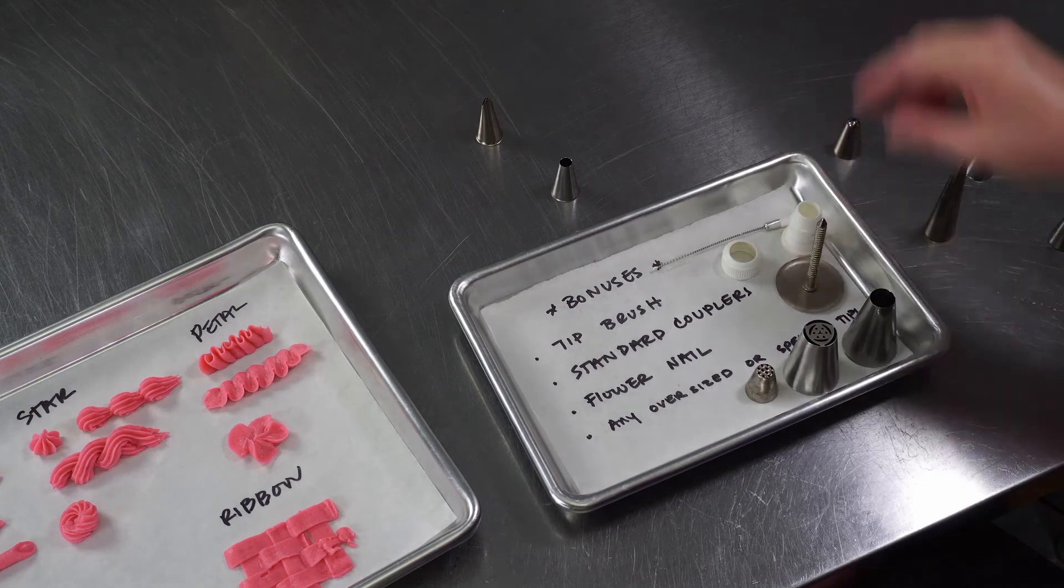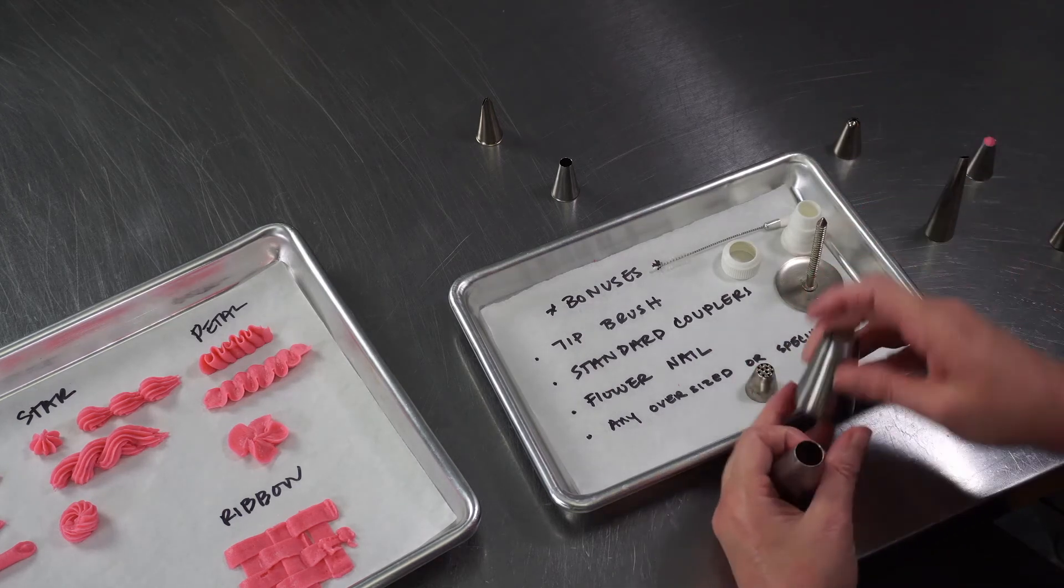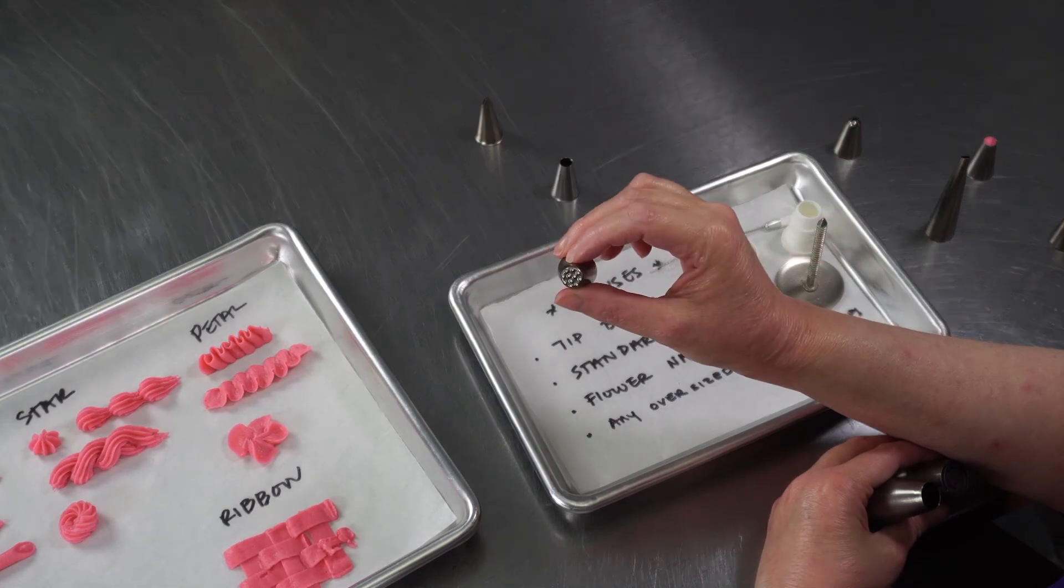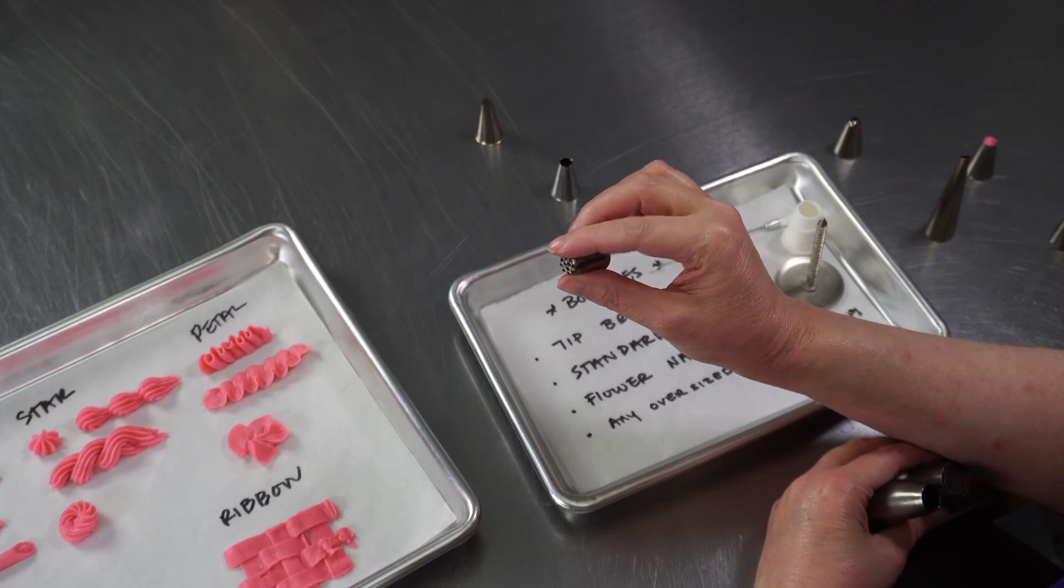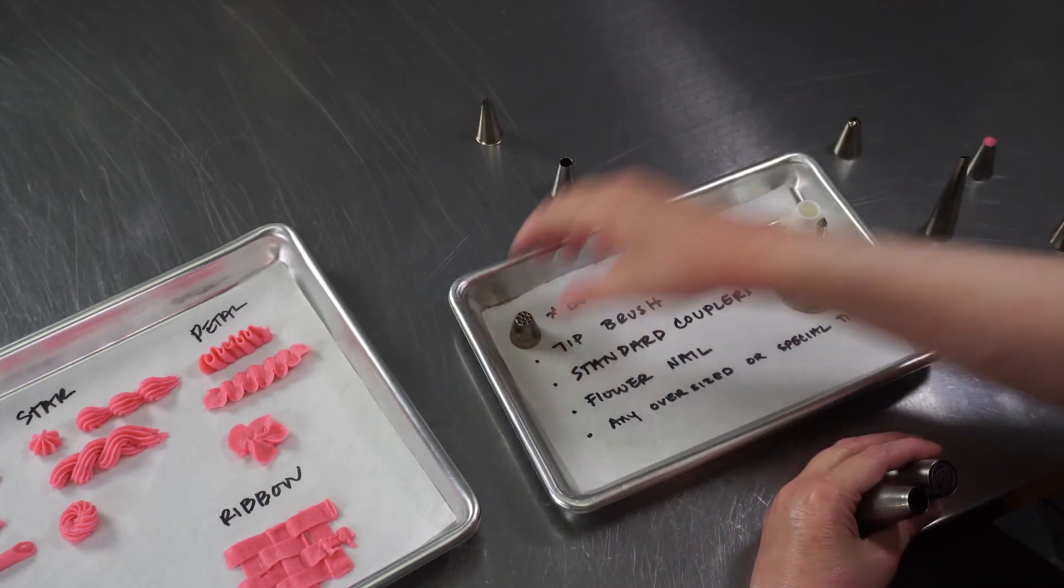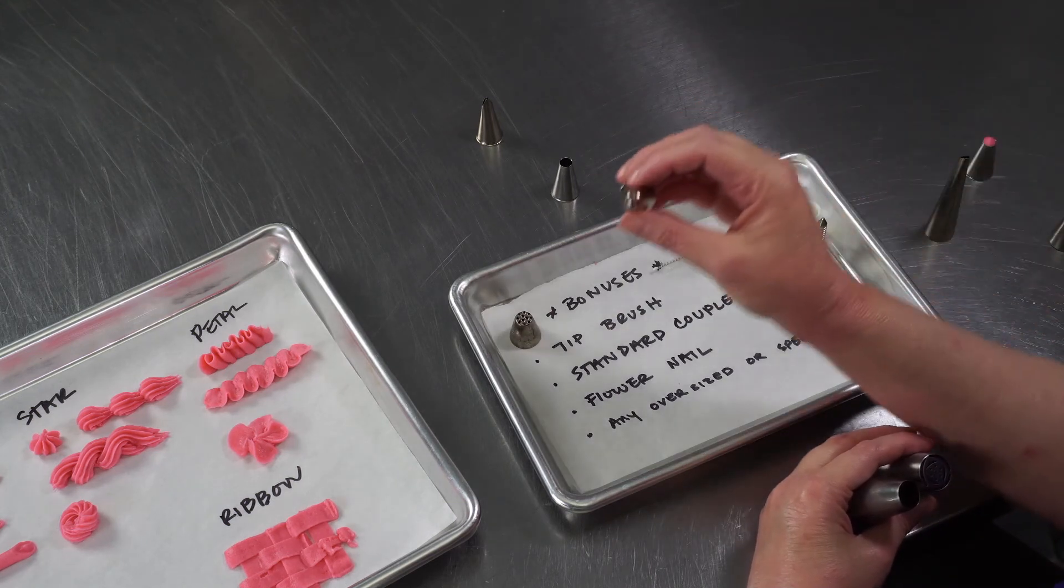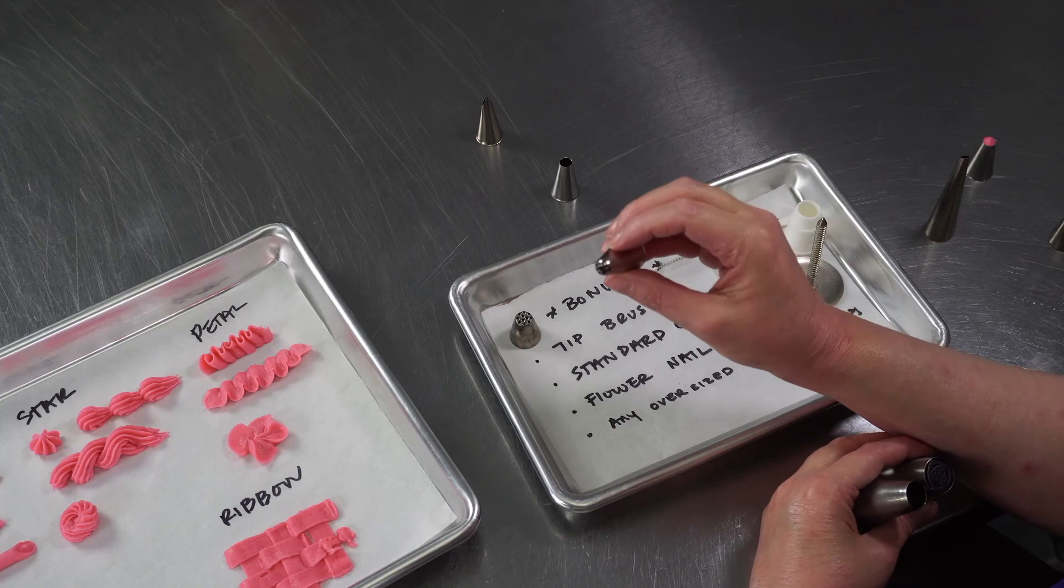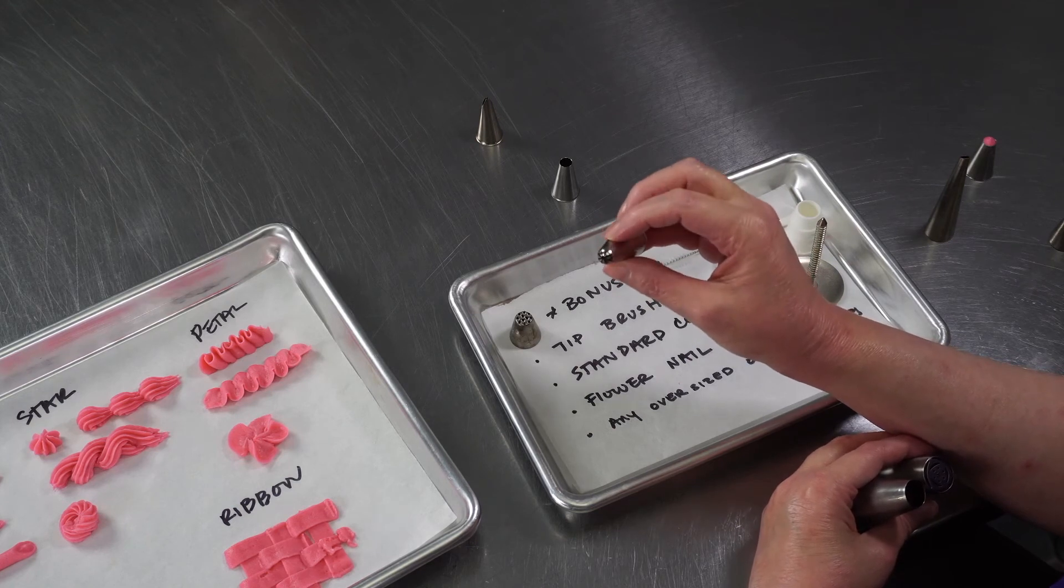And then there's a few other things that sometimes get thrown in. There's some different specialty tips, like this one is a grass tip. You can see it has multiple openings. It can be used to do things like the shag style cakes that are kind of having a moment right now. And it's really fun if you want to do things like cookie monster or a soccer ball cake and you need to pipe some grass. It's a great way to pipe a lot of little furry lines really quickly.